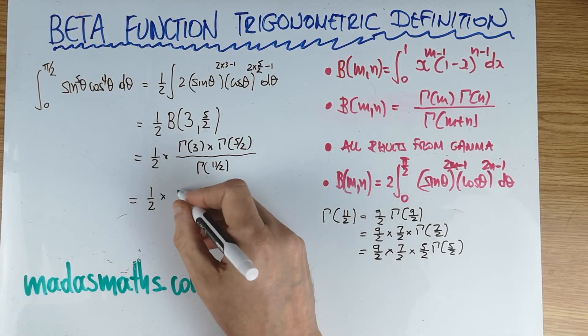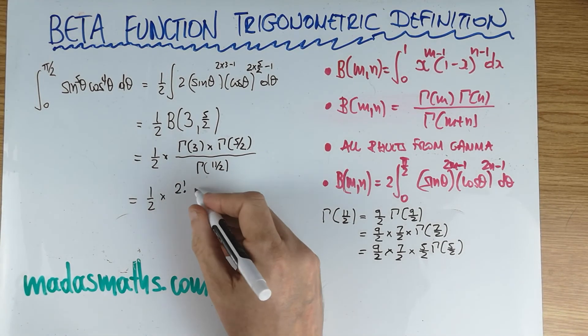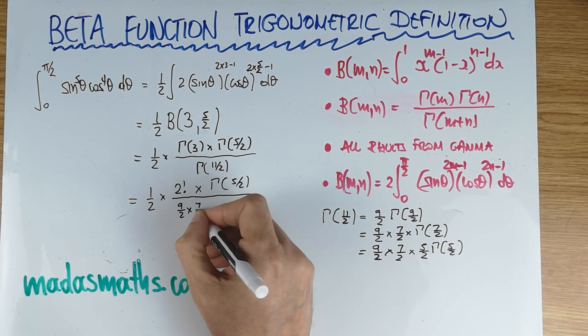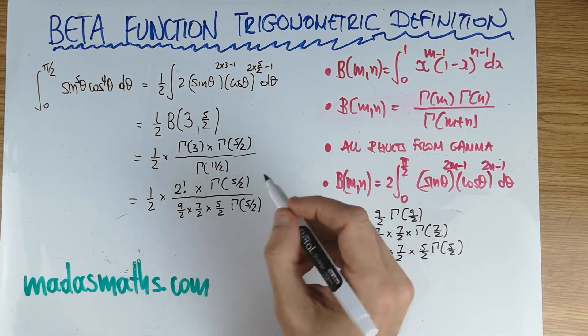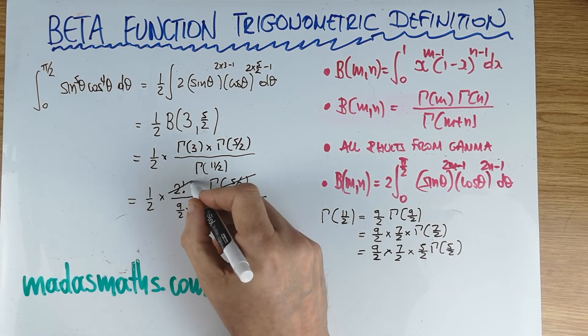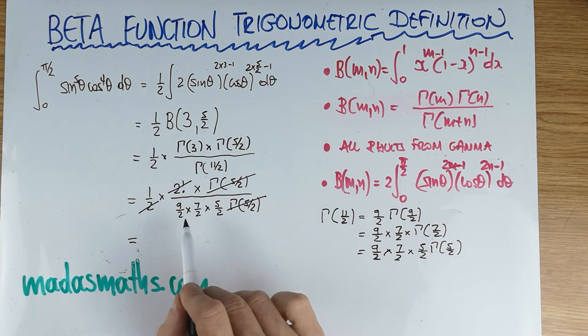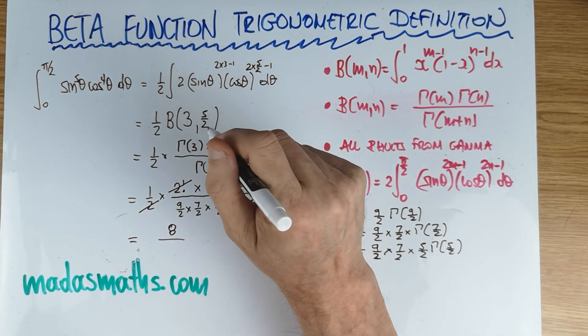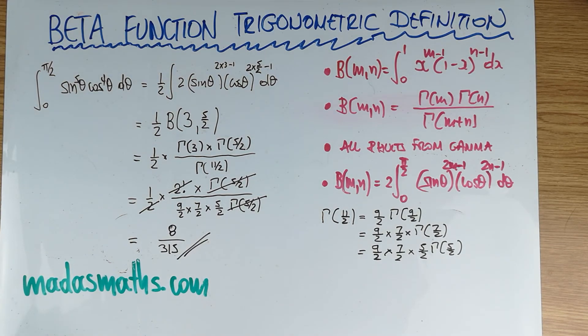That's a half. Gamma of 3 is 2 factorial. This is now 9 over 2 times 7 over 2 times 5 over 2 times gamma of 5 over 2. That has gone, and that has gone. 2 factorial is 2, so we can cancel the half. We've got nothing left here, and that's 8 on the top. On the bottom, we've got 9 times 7 is 63, 63 times 5 is 315. So 8 over 315.